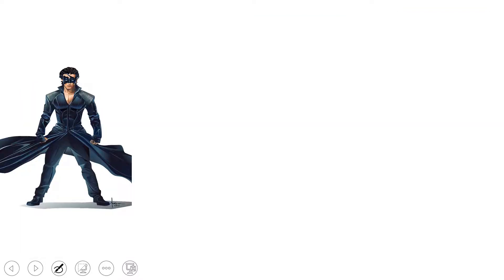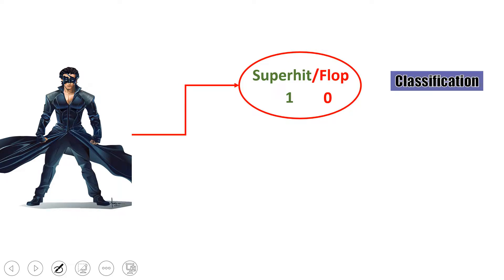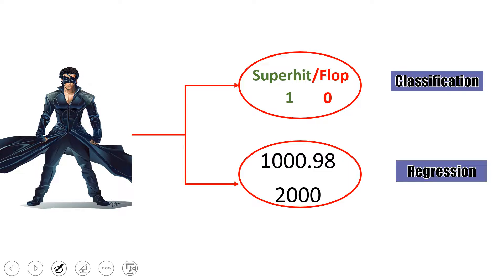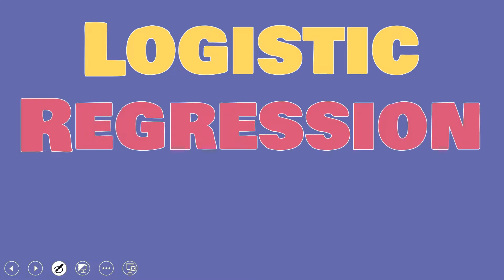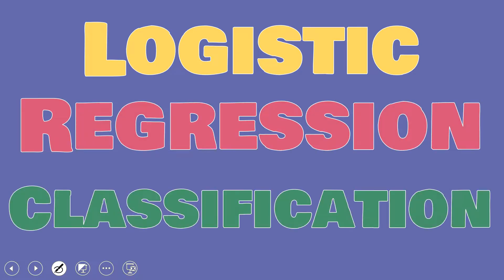Let's put it in a very simple way: you are producing a movie. If you are trying to predict whether it will be a superhit or flop, that means simply you are trying to predict a classification. If you are trying to predict its earning, which is in continuous numbers, then you are simply trying to find the regression. All right, then why is logistic called regression and not classification?